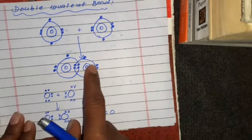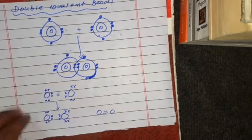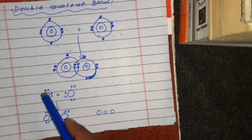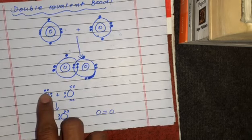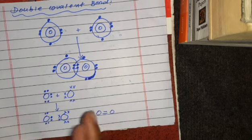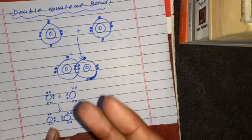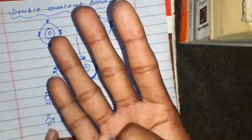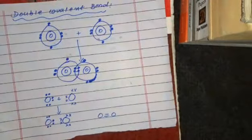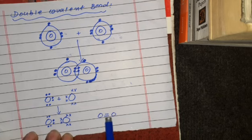They both have eight electrons — this oxygen atom has eight electrons and so does the other. They share 2-2 electrons, meaning the total shared electrons are four. After sharing 2-2 electrons, they form a double covalent bond. We can write it like this.